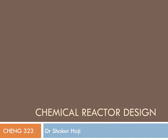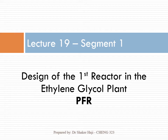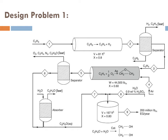Welcome guys. Today we're going to explain how to design the first reactor in the ethylene glycol plant. Before we do so, we're going to learn a few things related to plug flow reactors. As you recall, we said we're going to achieve our objective of learning how to design isothermal reactors through designing the reactors of the multi-reactor chemical plant which produces ethylene glycol from ethane. The first reactor in this plant is actually a plug flow reactor.